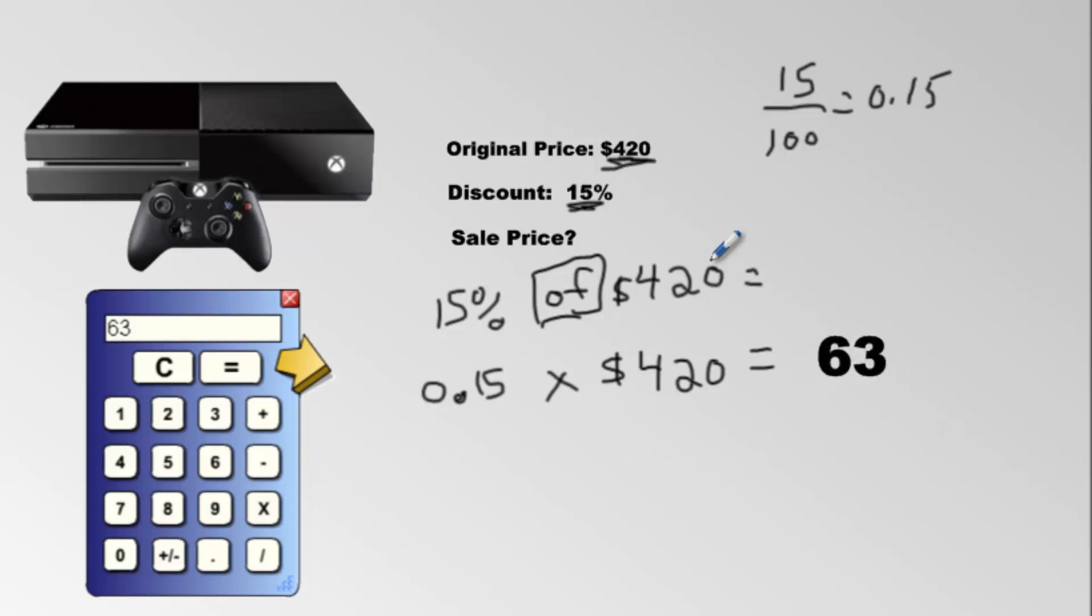So we write a dollar sign beside it. Don't forget your units. We get $63. So that's got to be the answer, right? No, it's not. You know why? Because that is the discount.